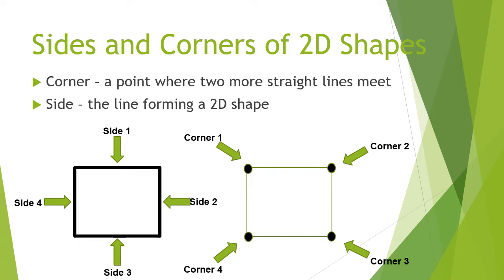Now let's understand about the sides of a two-dimensional shape. What is a side? The line that forms a two-dimensional shape is called a side. You can see in this figure that there are four sides. Let's count together: side 1, side 2, side 3, and side 4.